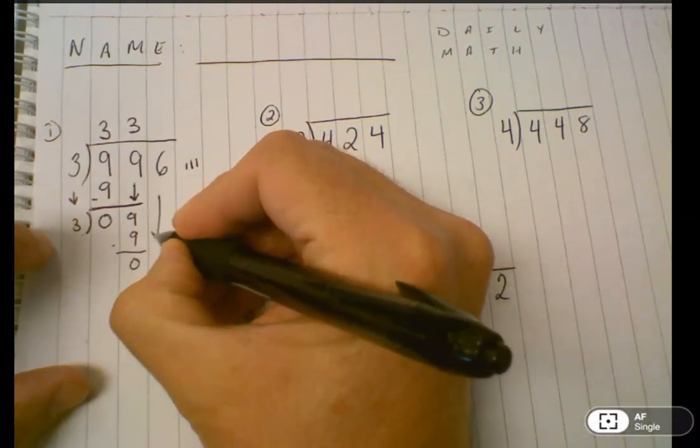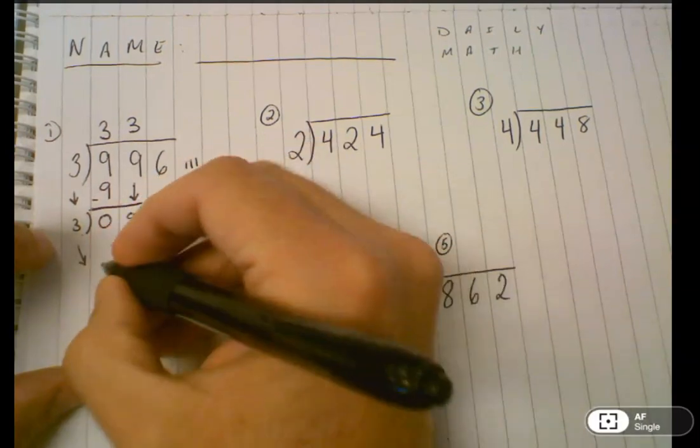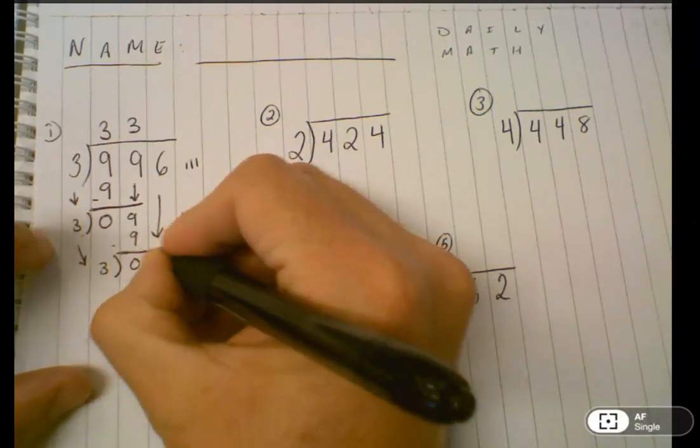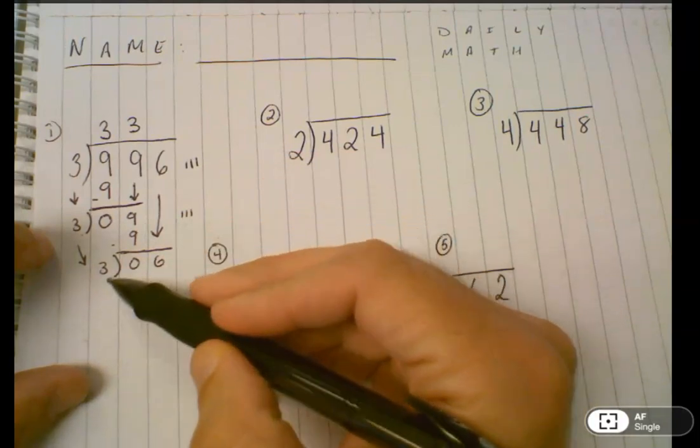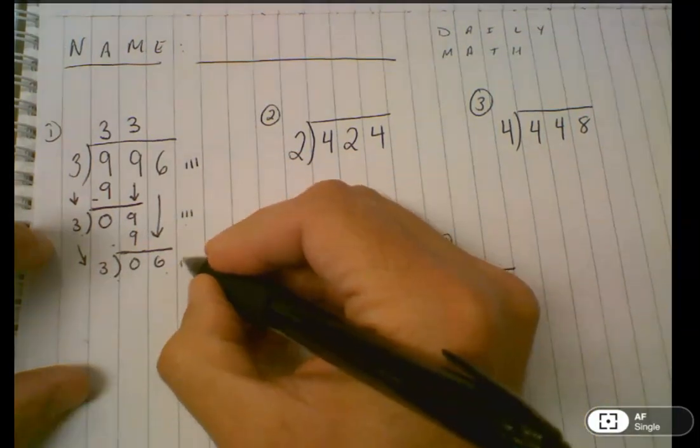Subtract, bring down the six, bring down the three, and repeat one more time. How many times can you skip count by three and get close to six? Three, six, two.